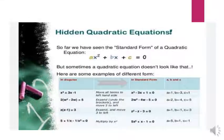Hidden quadratic equations: As you all know, the general form of a quadratic equation is ax² + bx + c = 0. Here are some examples.